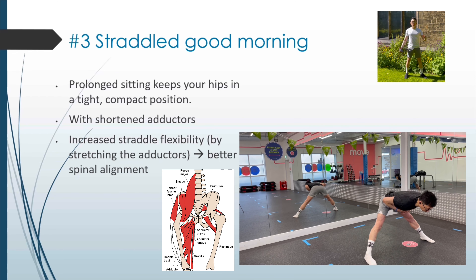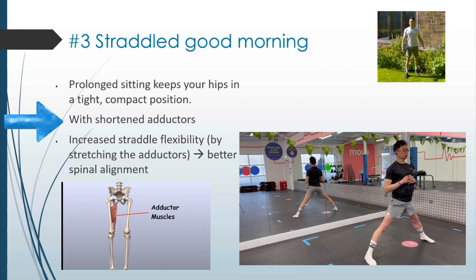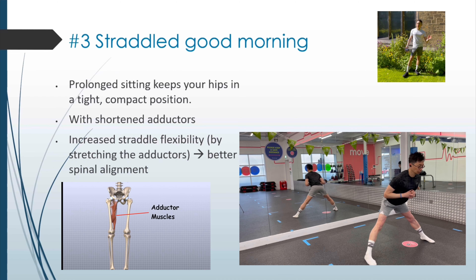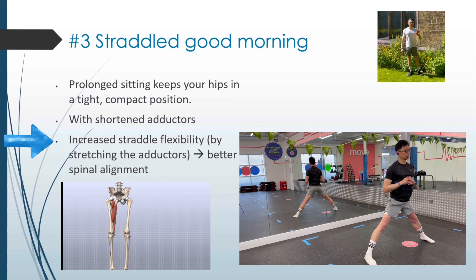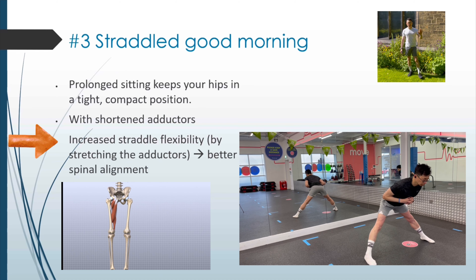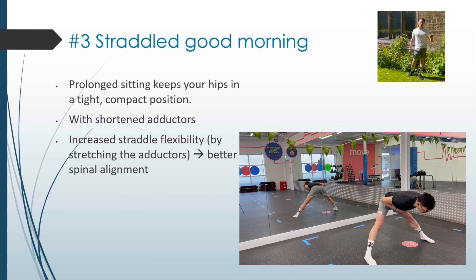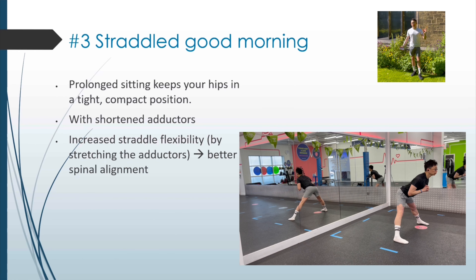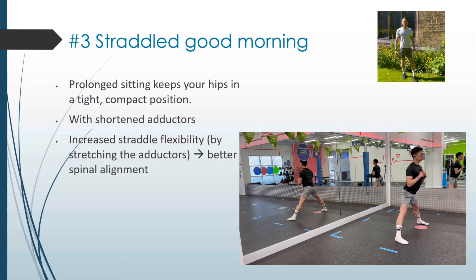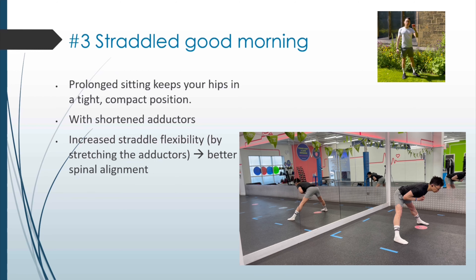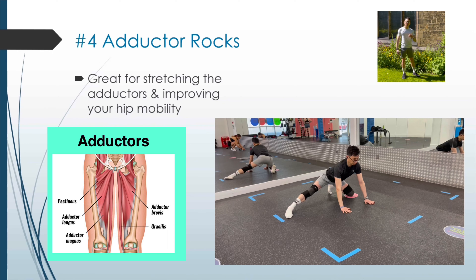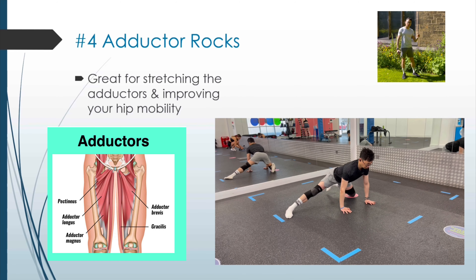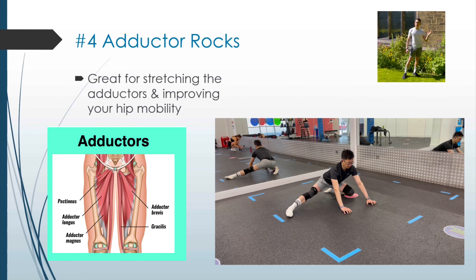Sitting for most of the day keeps your hips in a tight, compact position. Straddle flexibility is important because the hip adductors or inner thighs tend to be shortened because of the amount of time we spend sitting. Prolonged sitting also leads to a lot of tension and tightness, which can make you susceptible to injury. Increased straddle flexibility can help with spinal mobility and allow for proper core development. It can assist with better spinal alignment and help with improvement of lateral hip rotation, and this is key for us who spend the majority of our time sitting with our legs in a parallel position.